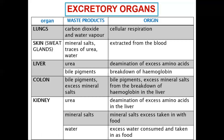Excess water consumed is also removed by the kidneys. You can tell how much water is in your body by the color of your urine: if it is yellowish, you don't have enough water and more is being absorbed back into the body. If it is colorless, you have too much water and the body excretes the excess as urine.